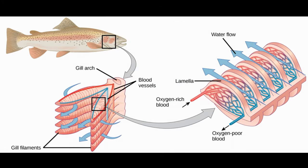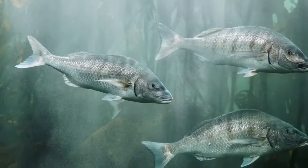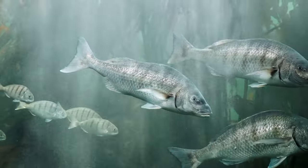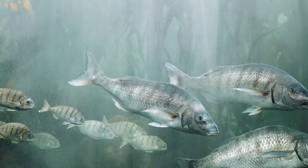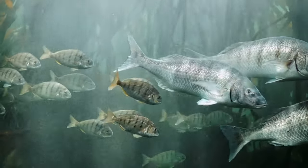Let's take a closer look at how this process works. As water passes over the gills, oxygen diffuses from the water and into the fish's bloodstream. At the same time, carbon dioxide is released from the fish's bloodstream and into the water. This exchange of gases allows the fish to extract the oxygen it needs to survive.